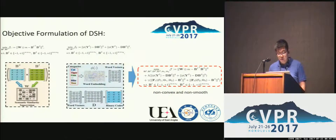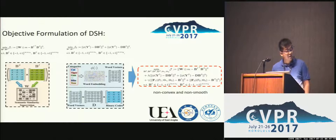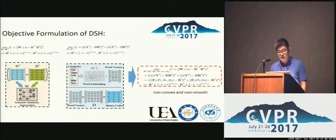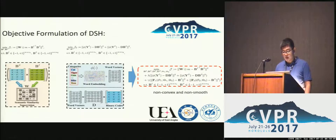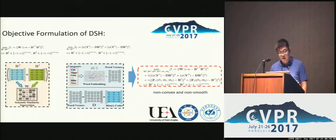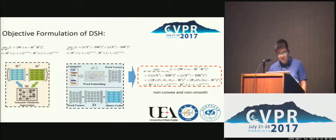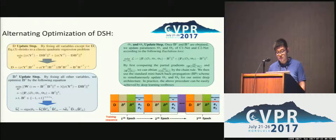To learn the sketch-to-image hash code, we first consider cross-view pairwise loss, which captures the semantic relationships between the sketch and natural images. We also capture the underlying similarity among different categories — for example, Tiger is more similar to Cat than to other classes. Then we form the final objective function consisting of these two loss terms.